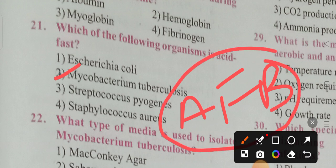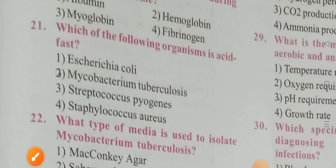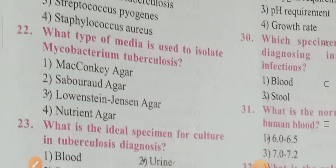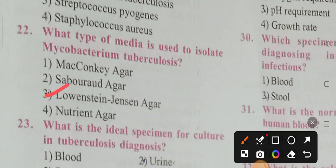Mycobacterium tuberculosis is acid-fast. What type of media is used to isolate Mycobacterium tuberculosis? Options include Lowenstein-Jensen agar, nutrient agar. Option 3 is the correct answer — Lowenstein-Jensen agar is used to isolate Mycobacterium tuberculosis.